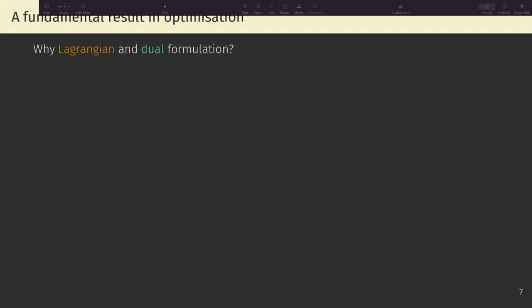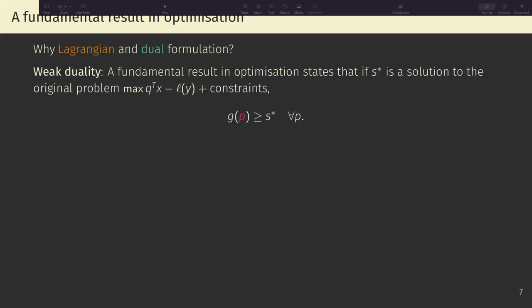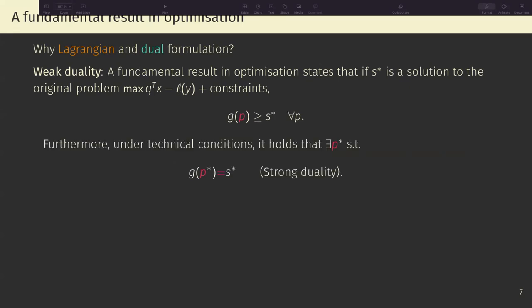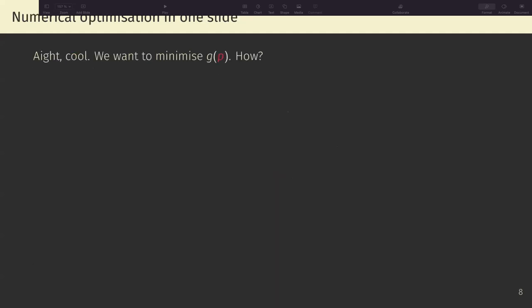Then we can define this auxiliary function called the dual G of P as L star plus F of P. And why are we doing this Lagrangian and this dual formulation? Well, there's a very strong result in optimization, a fundamental result in optimization that says that if S star is a solution to the original problem, meaning maximizing this utility minus the unhappiness, then it follows that the dual is always larger than this solution for any value of P. The proof is a one-liner, but I don't think I'm going to discuss it. And furthermore, under some technical conditions, it holds that there exists a price such that this holds with equality, which is called strong duality. So informally, this means that maximizing the Lagrangian, it's equivalent to minimizing the dual. So the problem boils down to minimizing G of P.